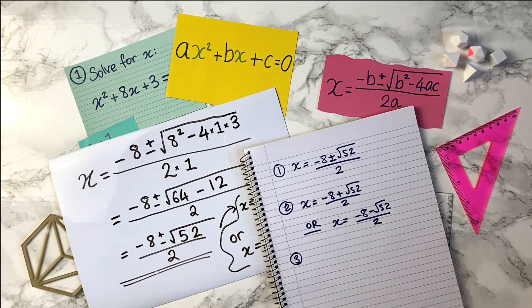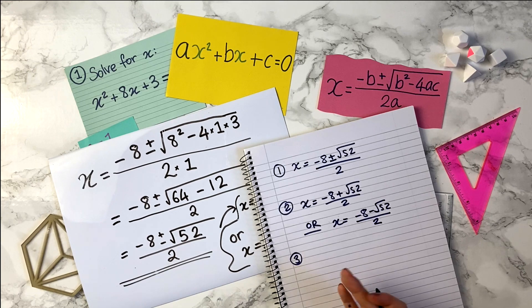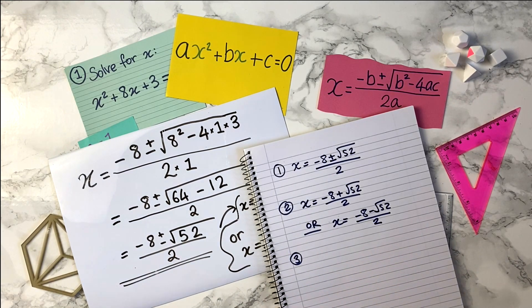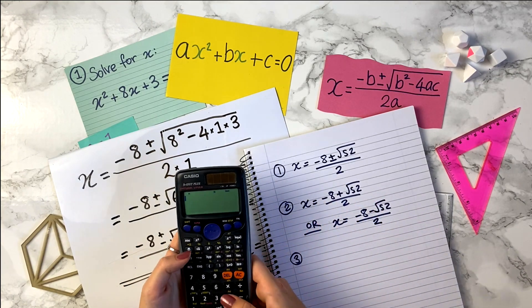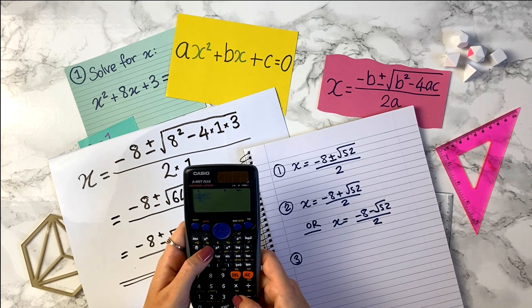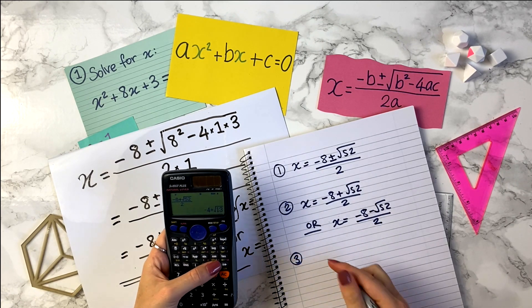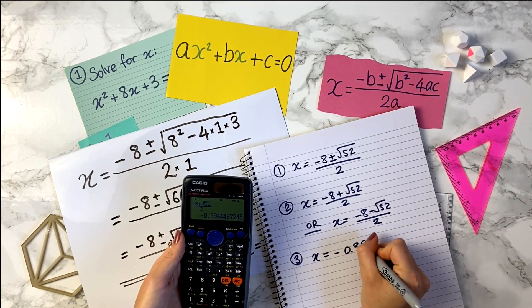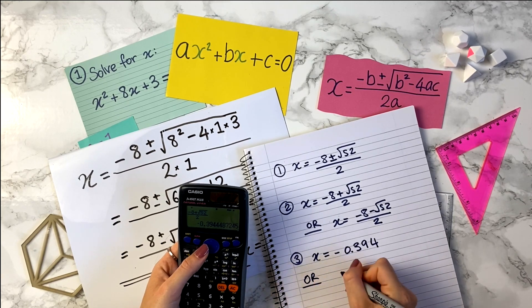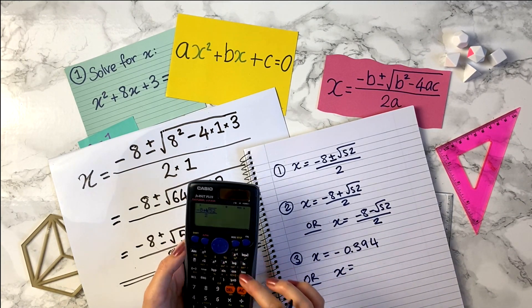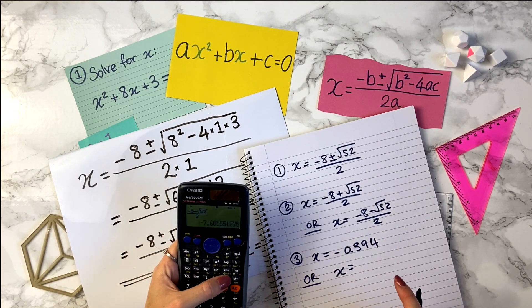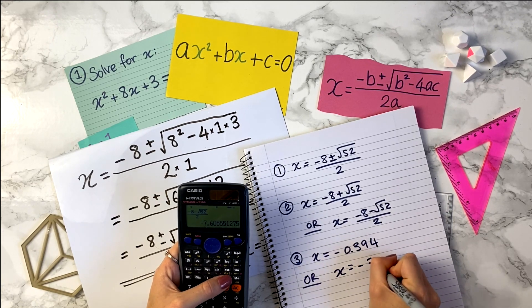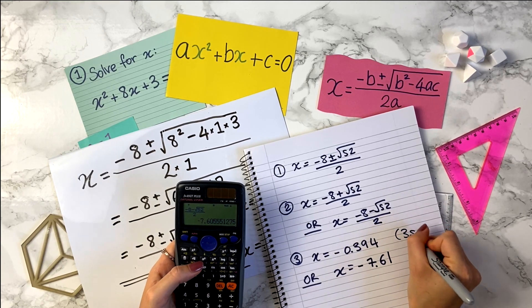Another thing you can do is if the question asks for the answer to a certain number of decimal places — maybe it will say solve for x, leave your answers to two decimal places, or perhaps to three significant figures. What you want to do then is get your calculator and put in both answers. So the first one: minus 8 plus the square root of 52, all divided by 2, gives us x equals, to three significant figures, minus 0.394. And the second answer — change that plus to a minus — gives us, to three significant figures, minus 7.61.